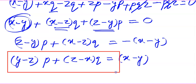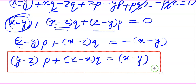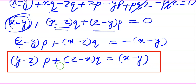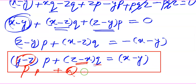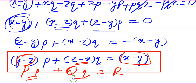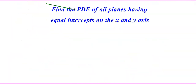Now the arbitrary constant a is eliminated. Therefore, the required partial differential equation is (y − z)p + (z − x)q = x − y. This is also called Lagrange's equation, of the form Pp + Qq = R. This is Lagrange's form.